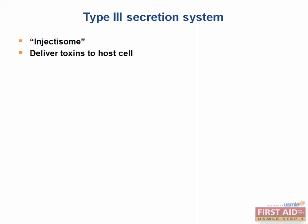Type 3 secretion systems are also known as injectisomes. These are essentially needle-like protein appendages found on gram-negative bacteria. They facilitate delivery of toxins to the eukaryotic host cell.